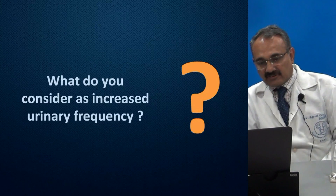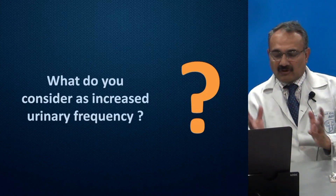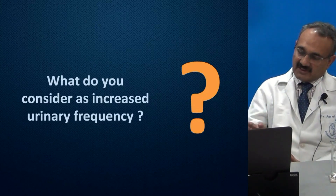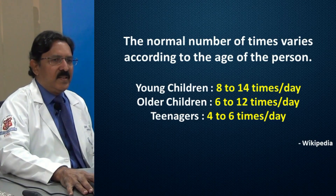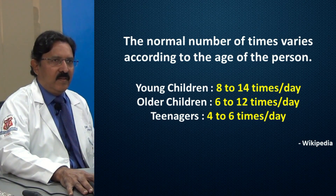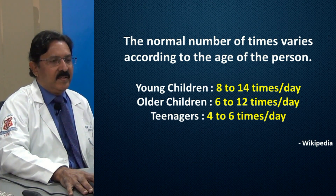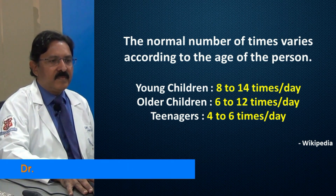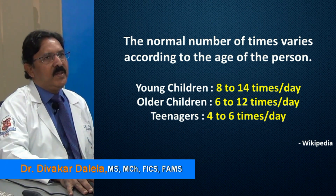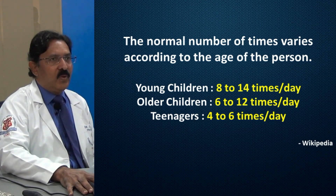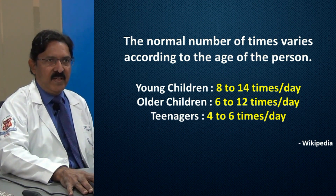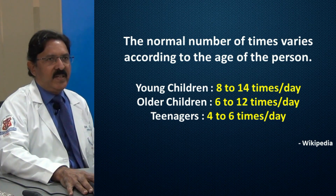What do we consider as increased urinary frequency? When should we label increased urinary frequency when someone comes to us in the OPD? There is no consensus view on what is an increased urinary frequency. For children, the number of times varies according to age — for young children 8 to 14 times per day can be normal, and for older children 6 to 12 times per day is normal. For a teenager, 4 to 6 times per day can be normal.